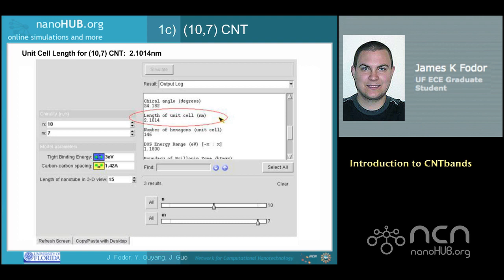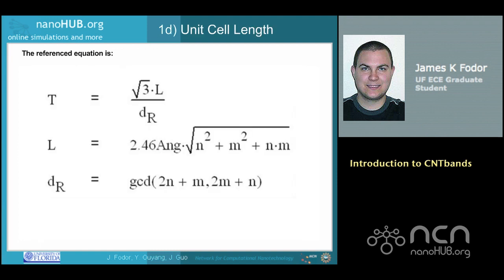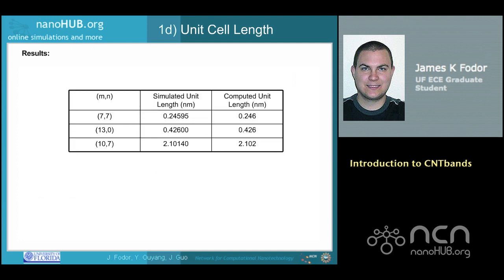To find the unit cell length of a 10-7 CNT, follow the procedure previously presented. The unit cell length is found to be 2.1014 nanometers. To compute the unit cell length, use the following equation for T. L and R are computed as shown. In all cases, the computed length matches the simulated length very closely.